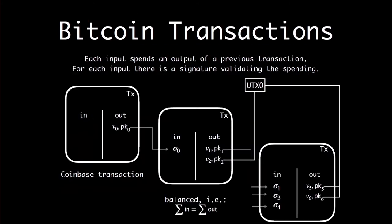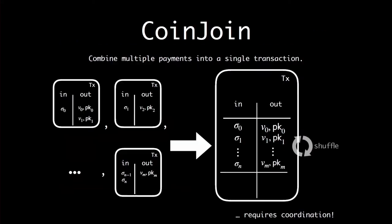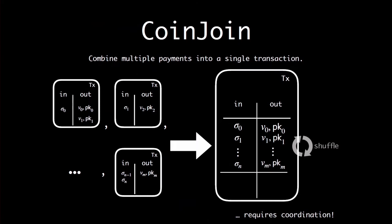The first improvement I mentioned is CoinJoin, which adds anonymity. The idea is that in the inputs there is no reason all the signatures should belong to the same person. If I get together with other friends making transactions at the same time, instead of signing only my little transaction, we could construct together by coordination a bigger transaction specifying all our outputs, and we would sign that bigger transaction instead.